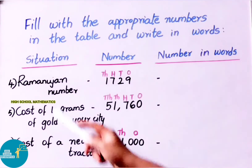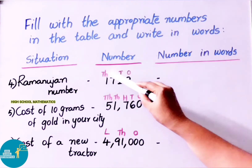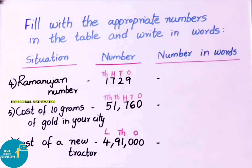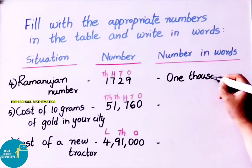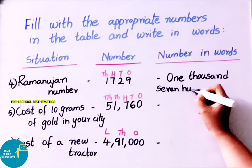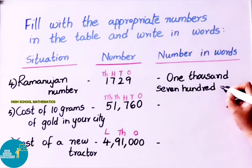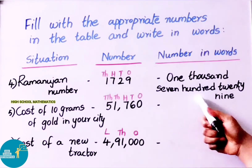Next example, children — the Ramanujan number. The Ramanujan number is 1729. The places are: ones, tens, hundreds, and thousands. Thousands place: 1 → 1,000. Hundreds place: 7 → 700. Tens place: 2 → 20. Ones place: 9 → 9. So the word form of 1729 is 'One Thousand Seven Hundred Twenty Nine.'